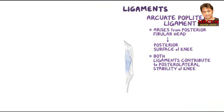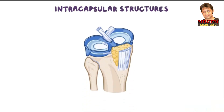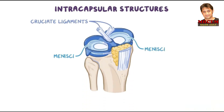The knee joint is also strengthened by intracapsular structures, which include the cruciate ligaments and menisci. The two cruciate ligaments are located within the fibrous joint capsule — so they are intracapsular — but lie outside of the synovial-lined articular cavity, and are therefore considered extra-articular.